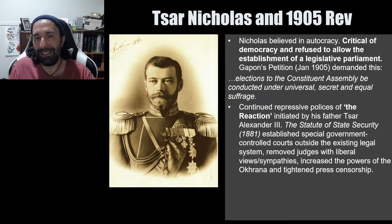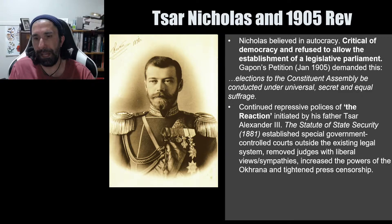The Statute of State Security was passed in 1881. It established special government-controlled courts outside the existing legal system, removed judges with liberal views or sympathies, increased the powers of the Okhrana, and tightened press censorship. The Okhrana was the Russian secret police.